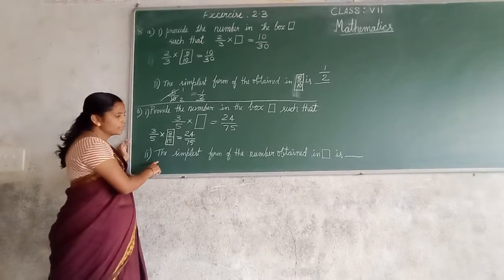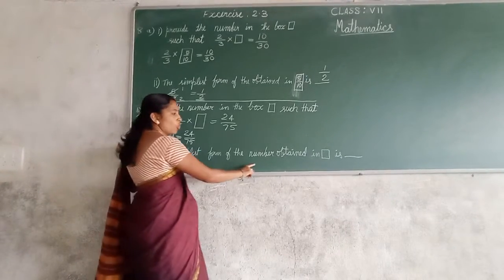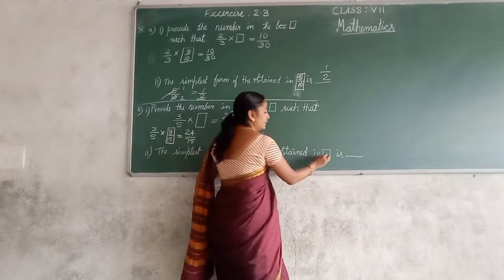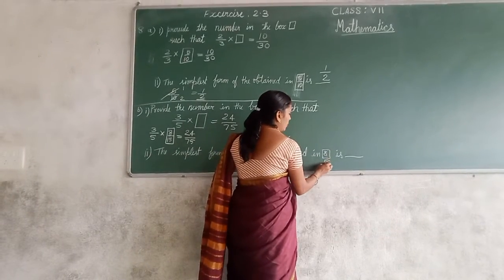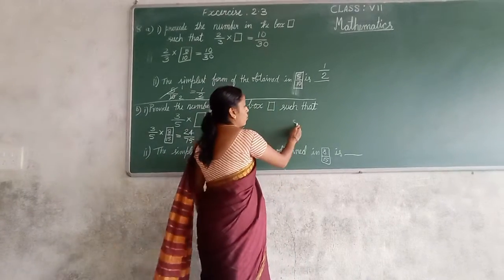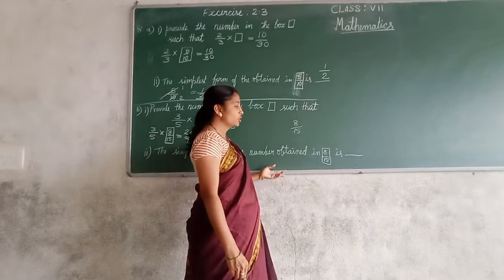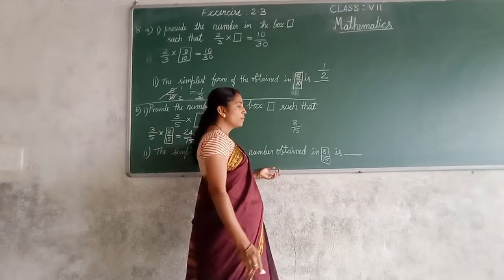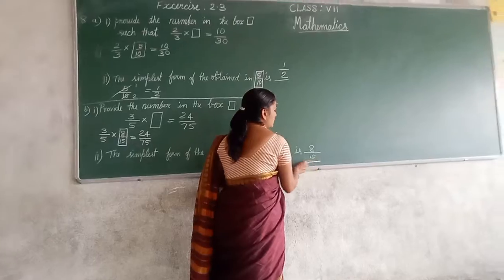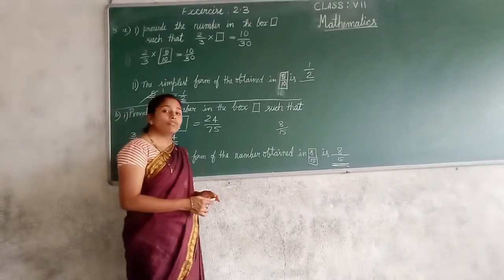They are asking again for the simplest form of the number obtained in the box. We have got 8 upon 15. Can you reduce it to the simplest form? It is not possible. So you can write 8 upon 15 as the answer.